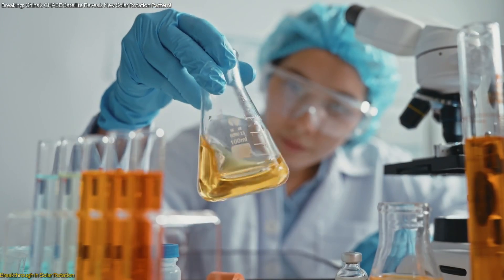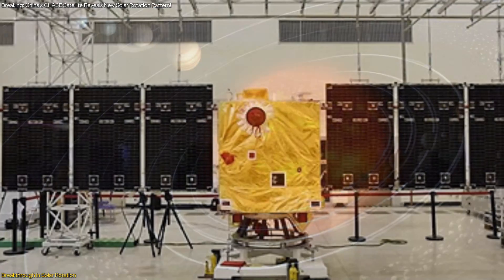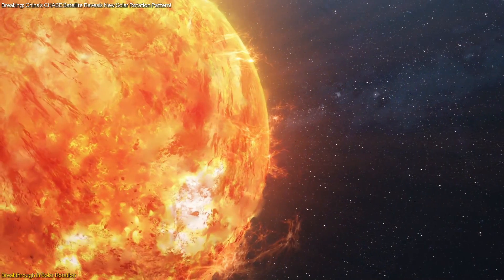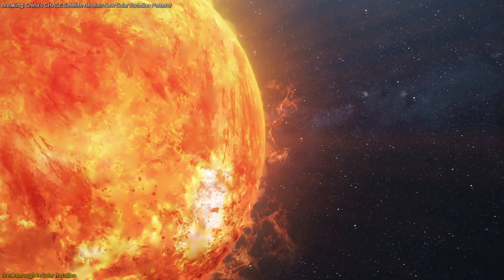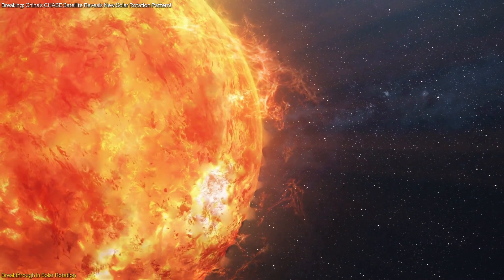Chinese scientists have just made a groundbreaking discovery in solar research using the Chase satellite. They've identified a surprising new pattern in the sun's atmospheric rotation, revealing that higher layers of the sun's atmosphere rotate faster than previously believed.